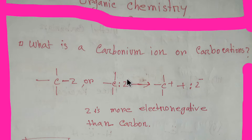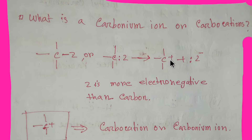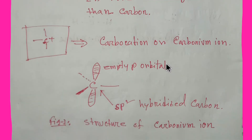Z is more electronegative than carbon. Electronegative means the power to attract electrons, so Z will be negative and carbon will be positive. Such an organic species where carbon is positive is known as a carbonium ion or carbocation.